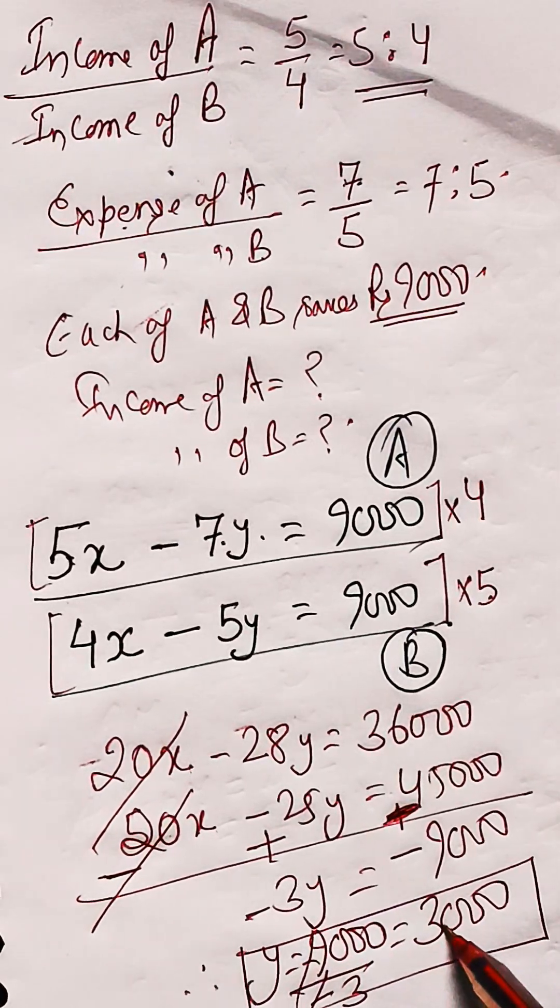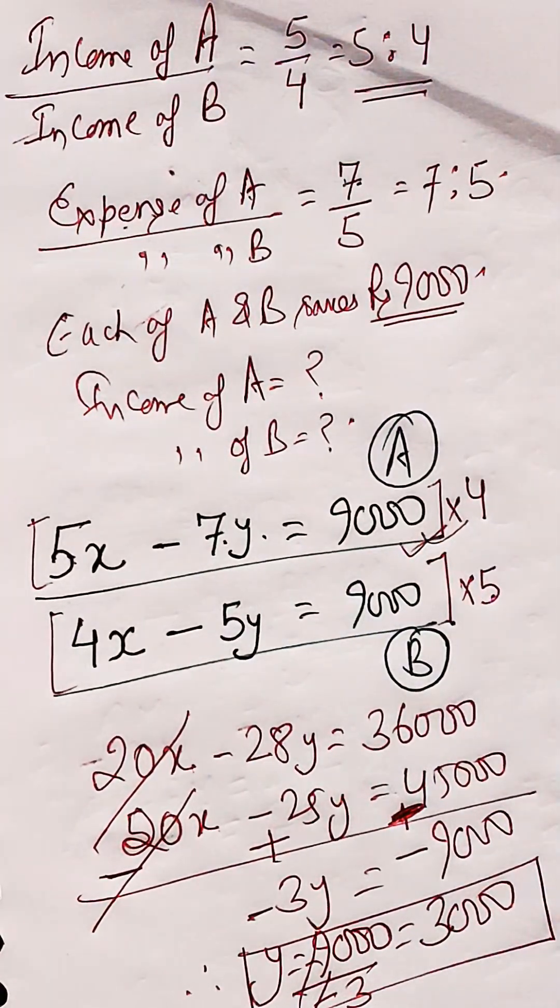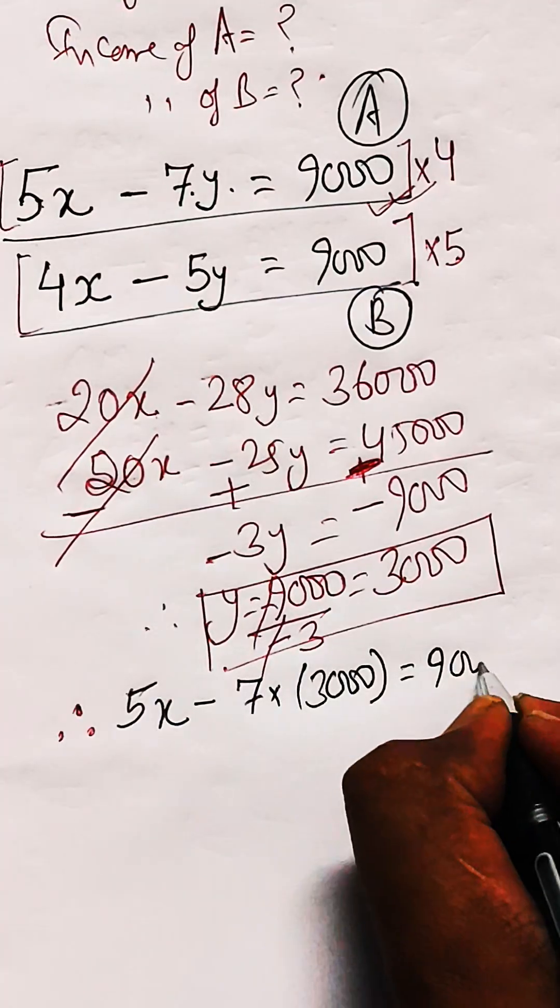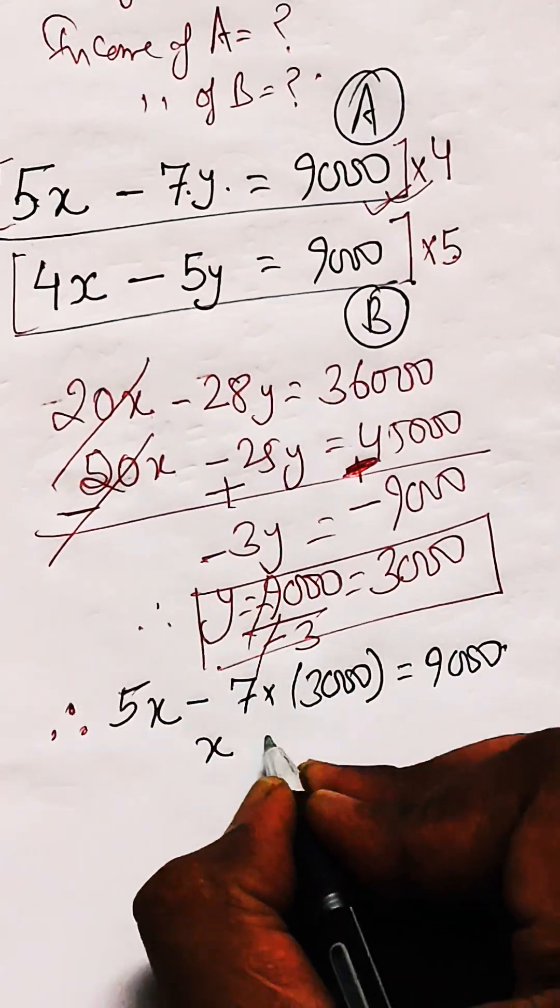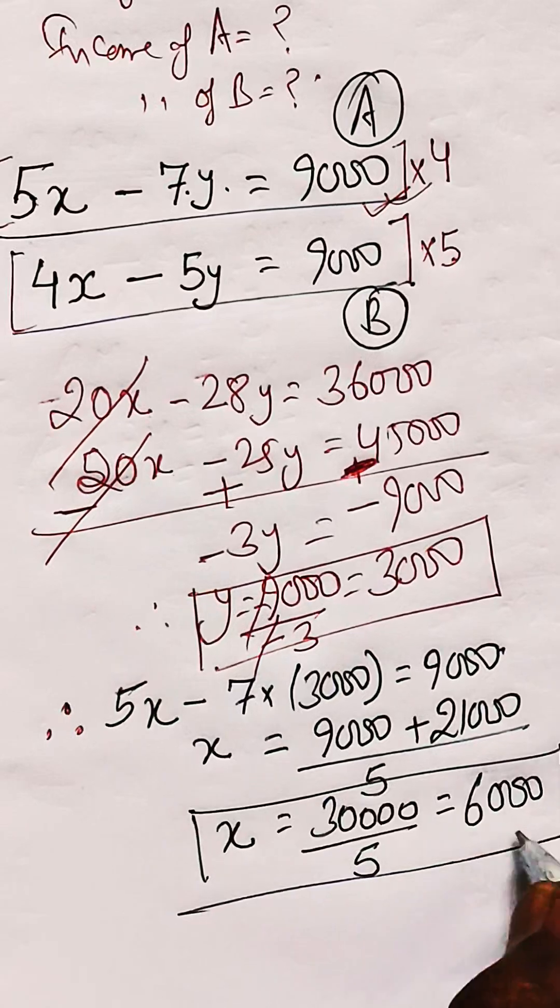Now put this value of y equals 3000 into one of the equations to get the value of x. This gives you x equals 6000.